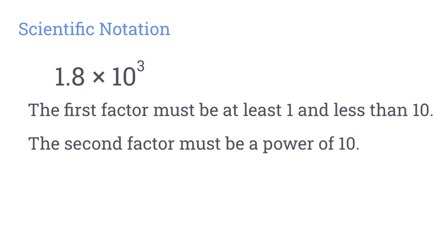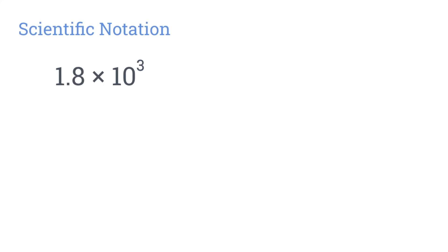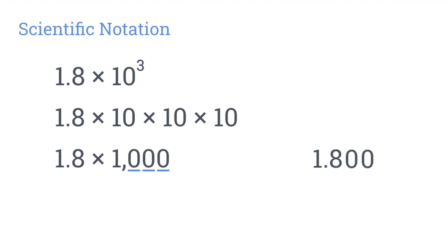But what is this number in standard form, the way we're used to seeing numbers? Let's break it down. 10 to the power of 3 means 10 times 10 times 10. This is equal to 1,000. Next, find 1.8 times 1,000. Since 1,000 has three zeros, we move the decimal point three places to the right. Before we do this, we'll need to write extra zeros here. Now we can move the decimal three places. So 1.8 times 1,000 is 1,800. This number is now in standard form.